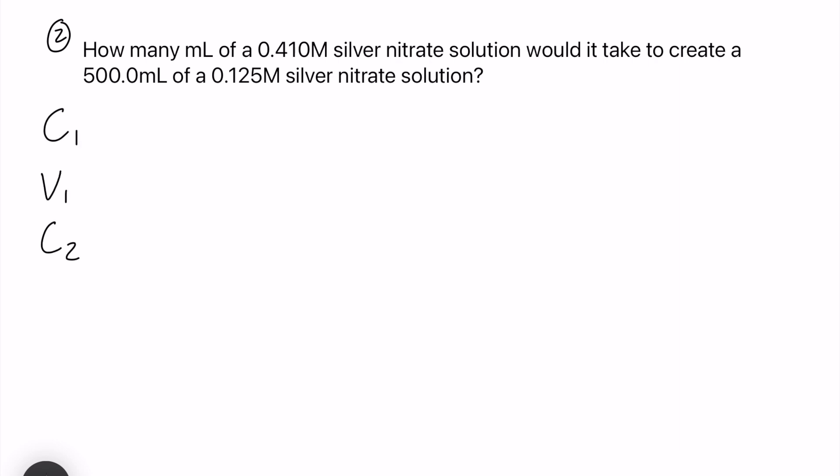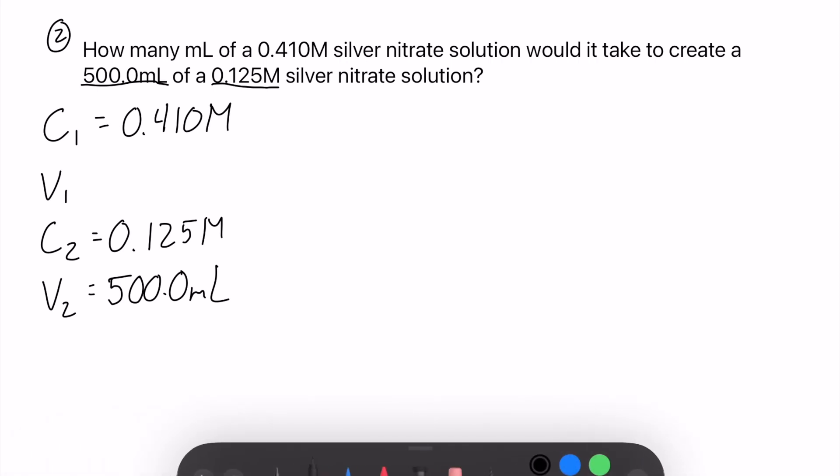Let's fill out our variables list first and see what we're solving for. So our C1 looks like it will be 0.410 molar and we have our V2 and our C2 as well. So our C2 looks like it's 0.125 molar and our V2 is 500.0 milliliters. And you know what, let's change that to liters really quick here. We have 0.500 liters.